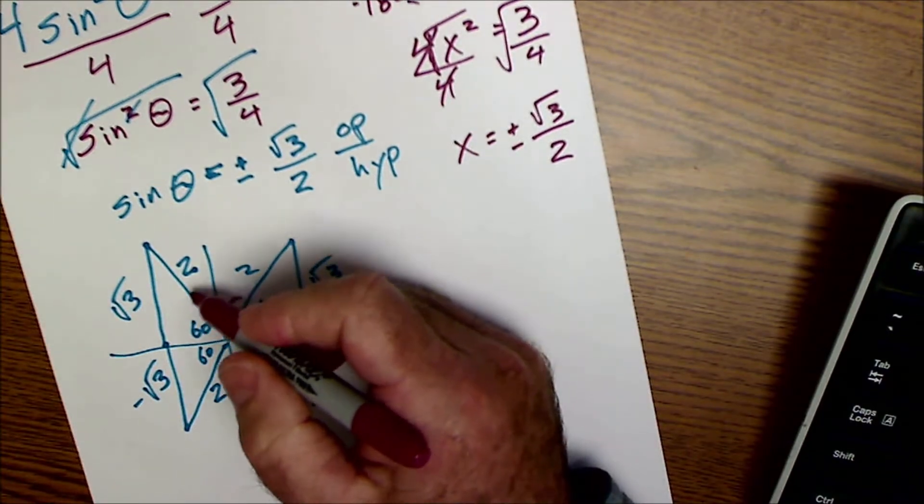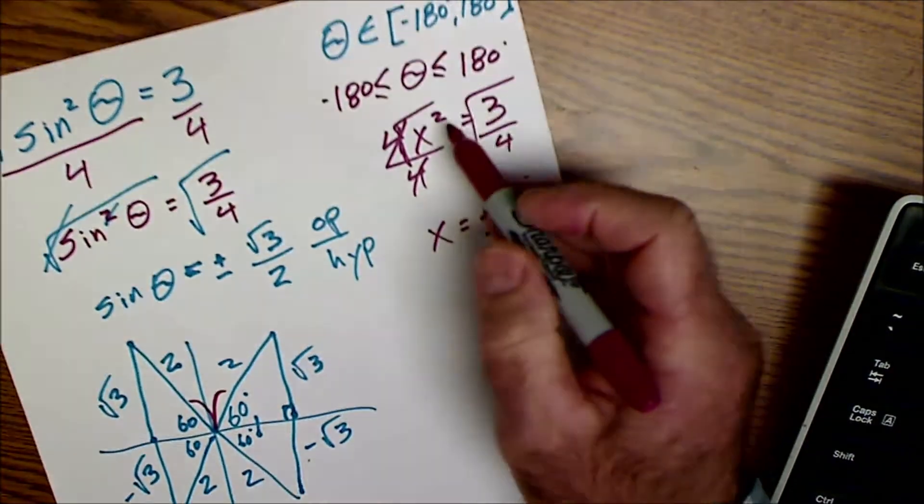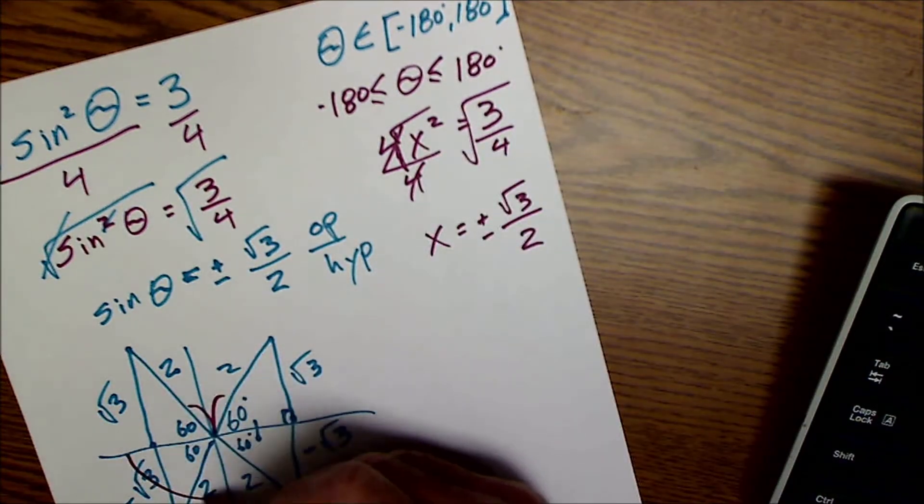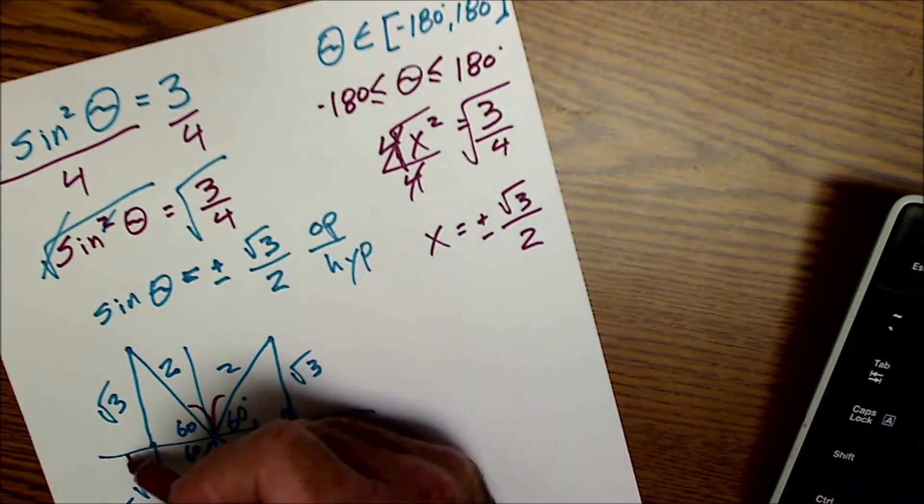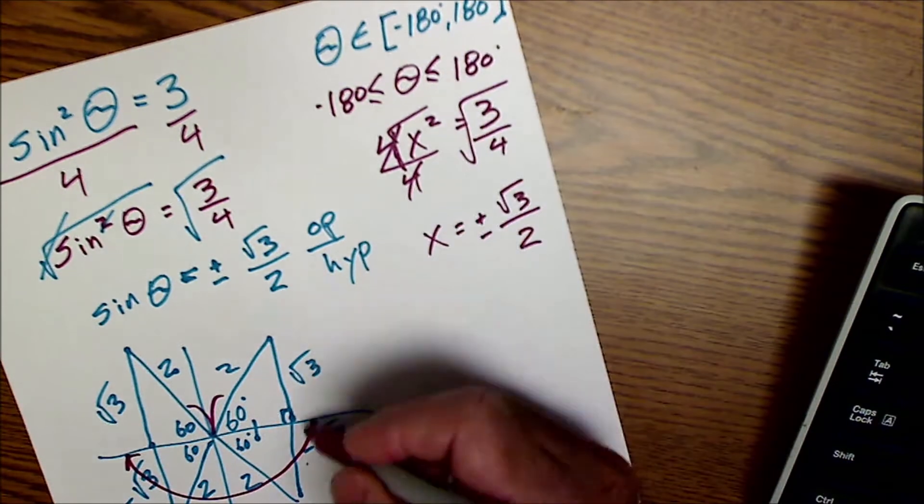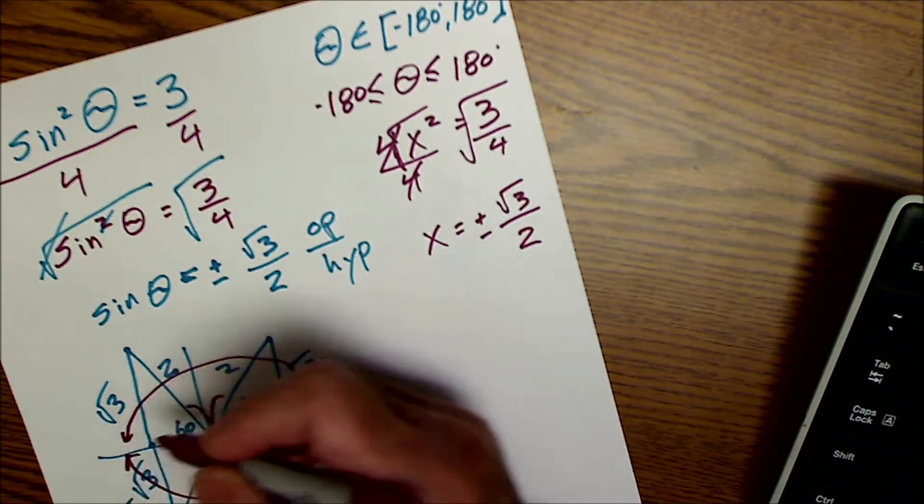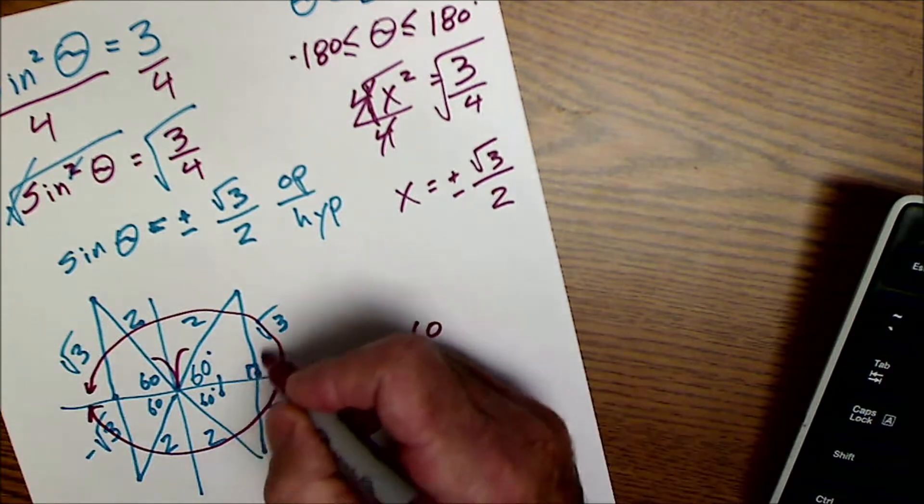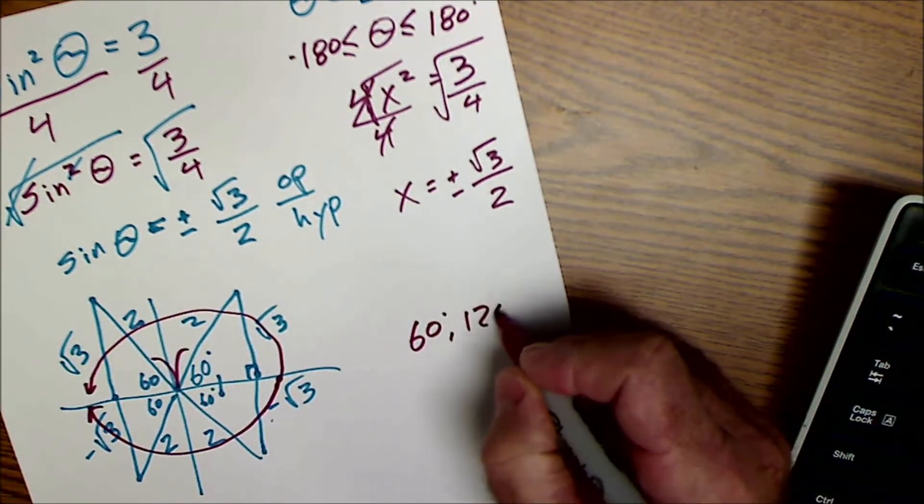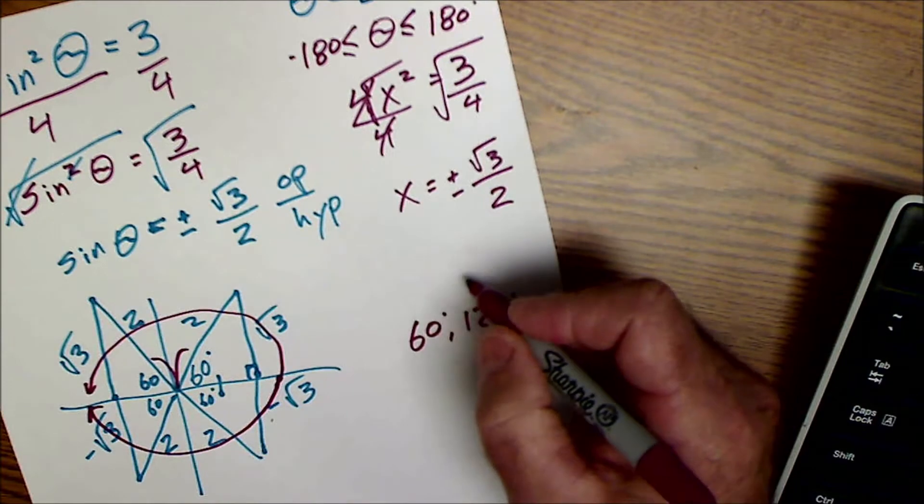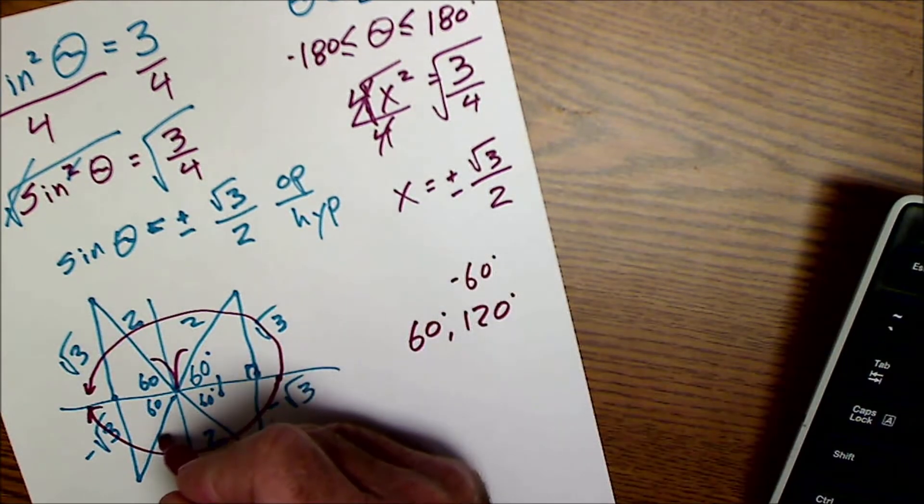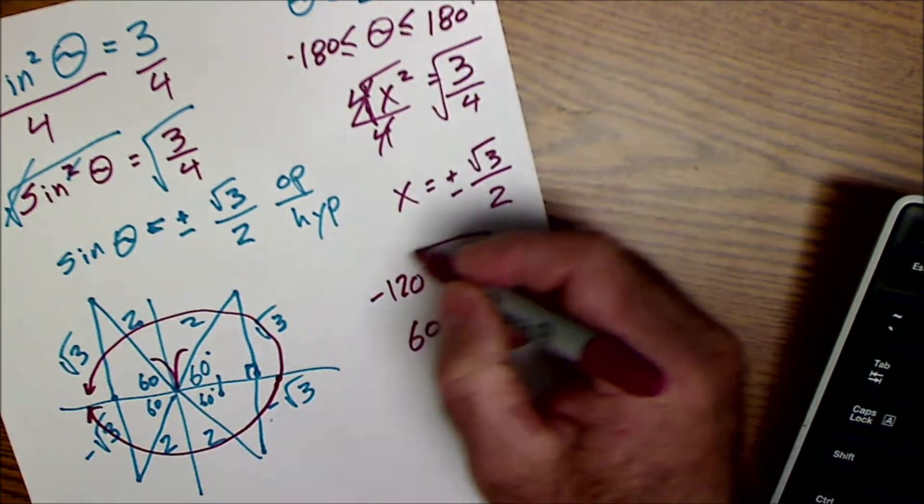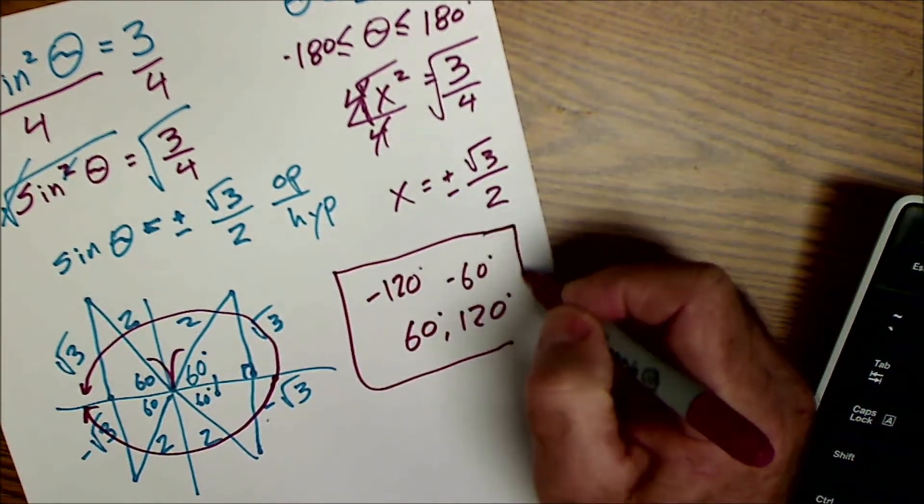I don't want every one of those solutions. 60, 120, 240, 300. I only want the solutions in this domain. So this domain starts at negative 180 to 0. So 0 to negative 180. And then 0 to positive 180. So the solutions in that set would be the 60, the 120, the negative 60, and the negative 120. That's 60 reference there. So there are 4 solutions in this set. And those are them right here.